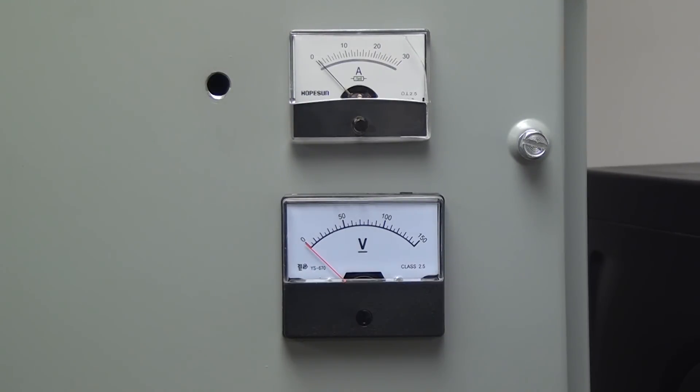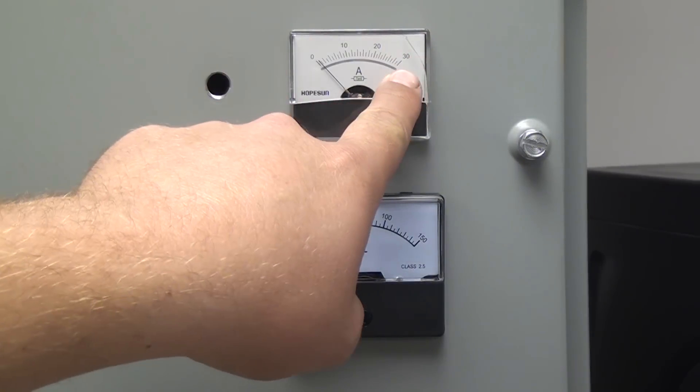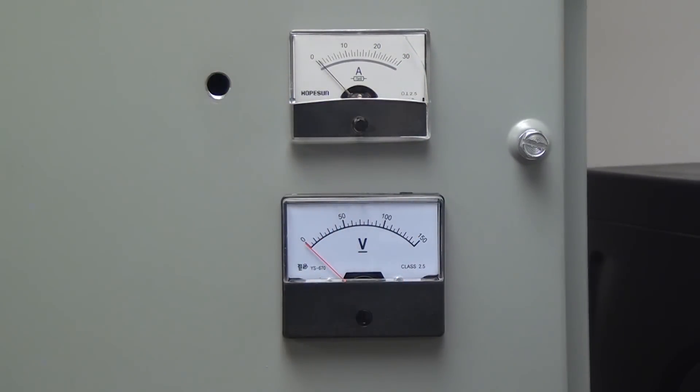My motor for my mill is a DC 2.8 horsepower treadmill motor. It's rated at 130 volts and 15 amps. So I have a 30 amp ammeter and a 150 volt meter.